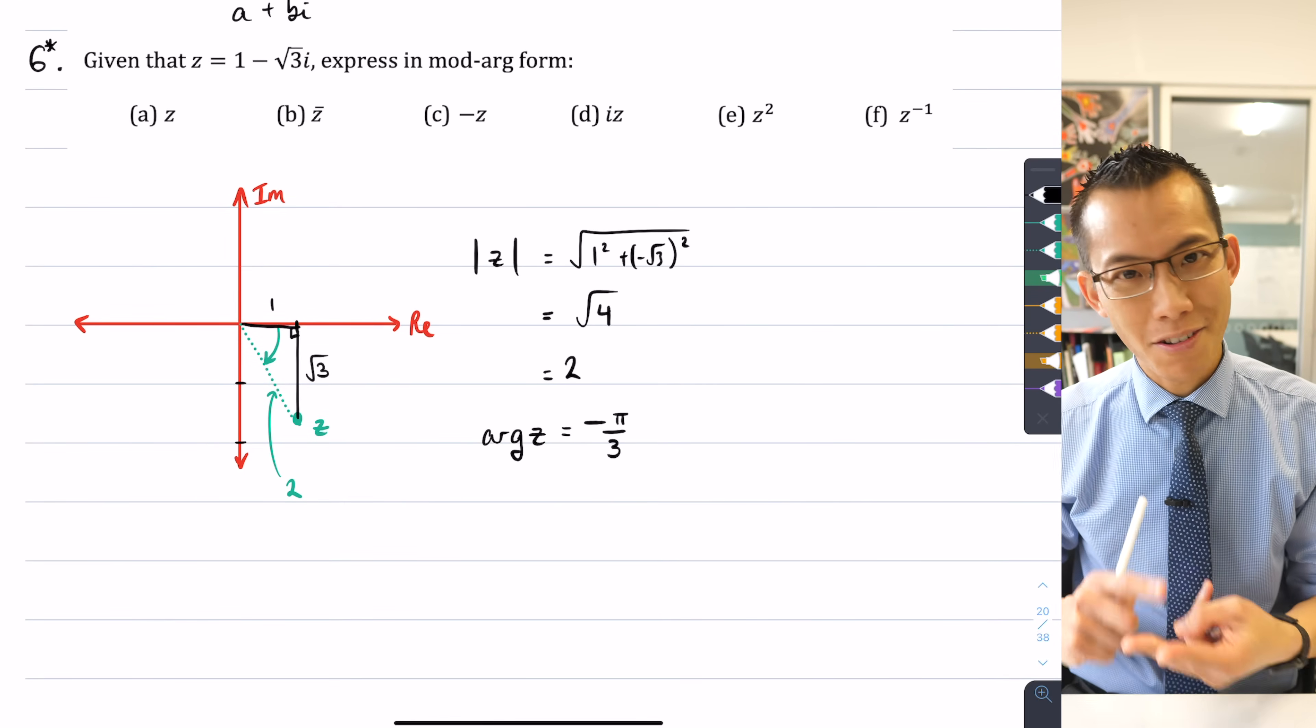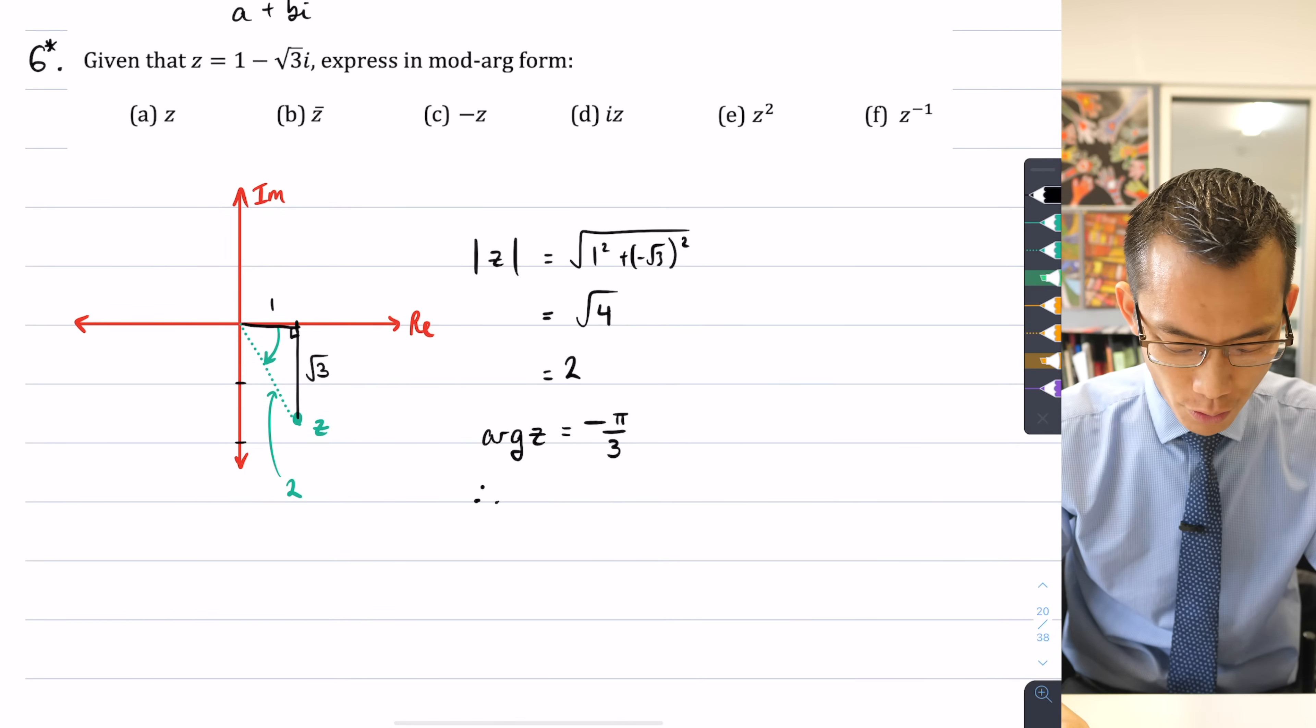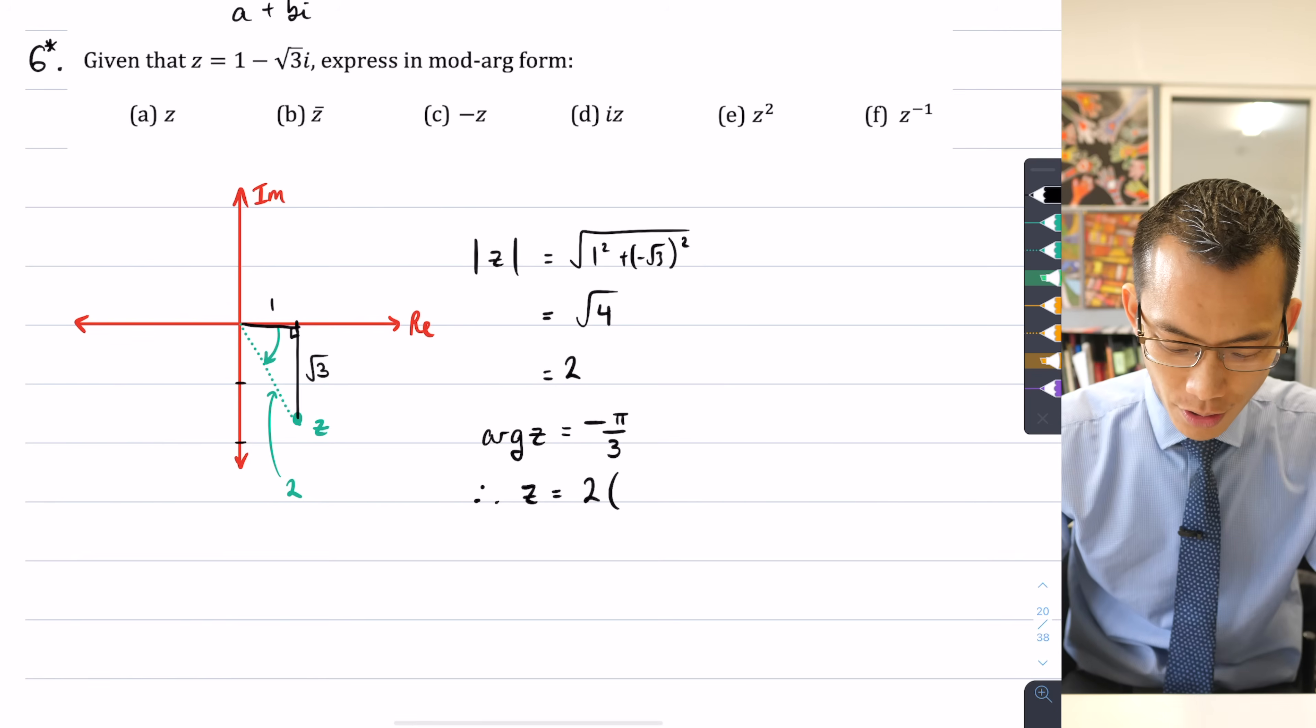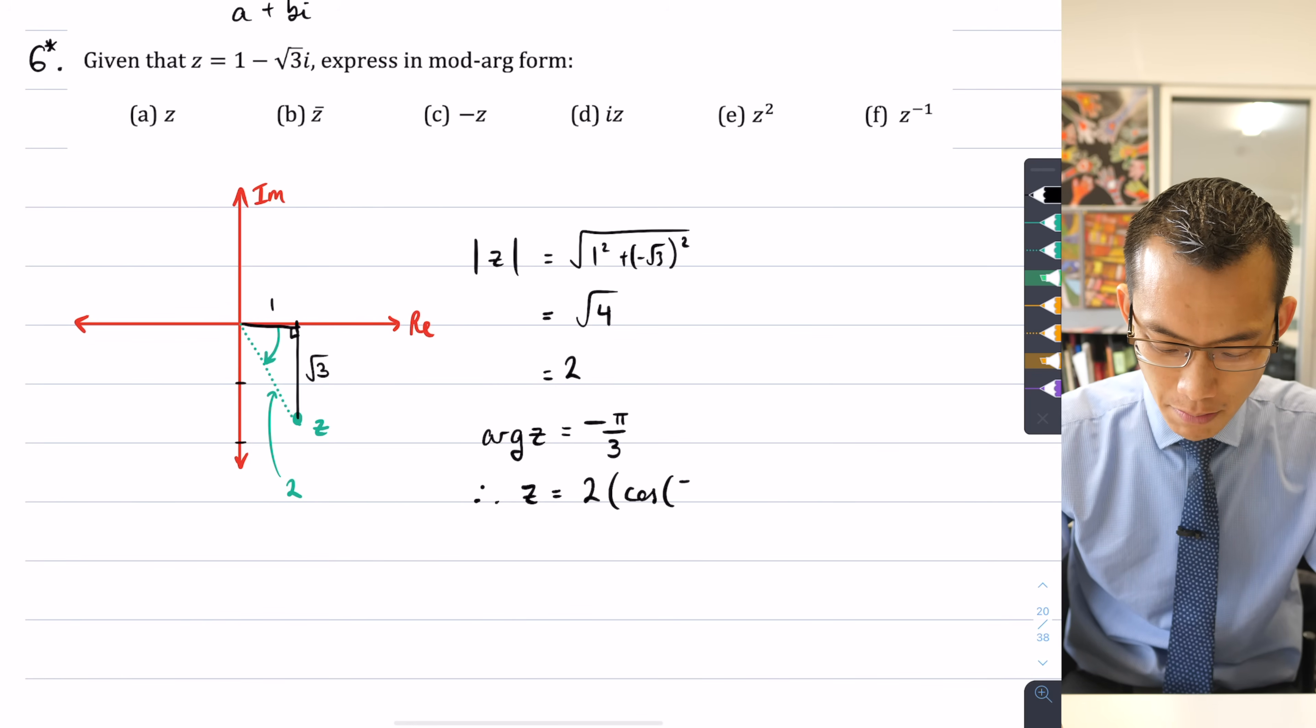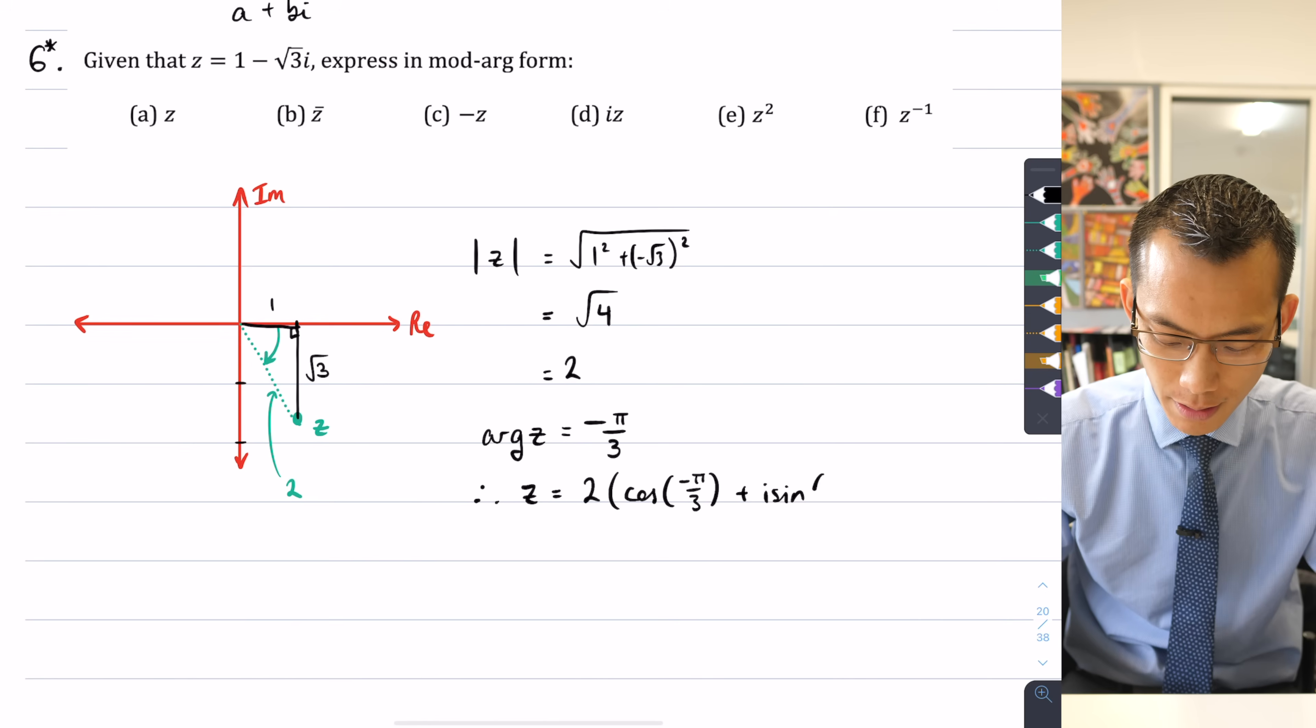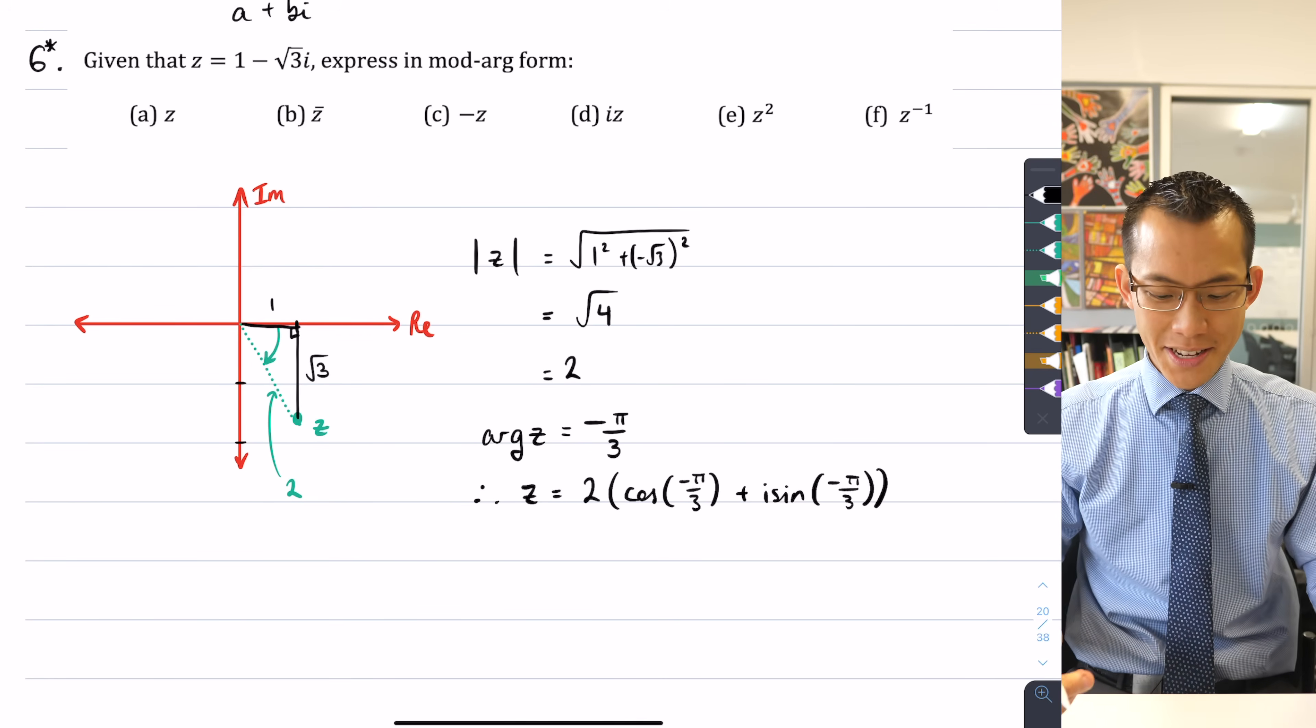So therefore, I've got my modulus, I've got my argument, I can say therefore that z equals 2(cos(-π/3) + i sin(-π/3)). So there it is.